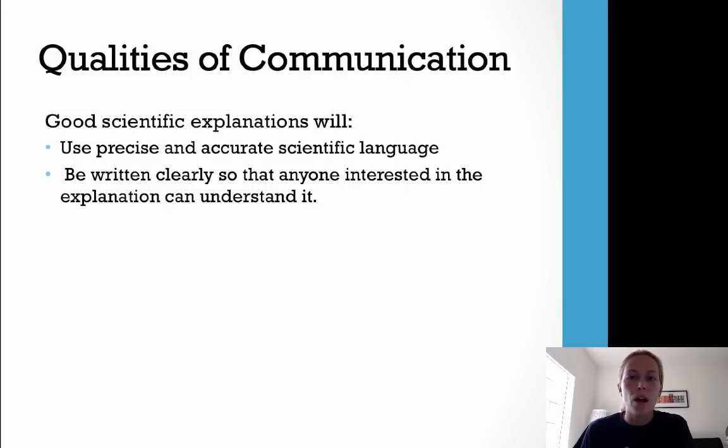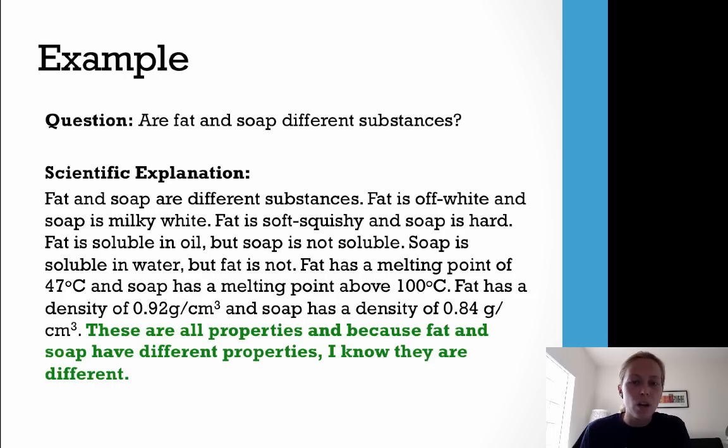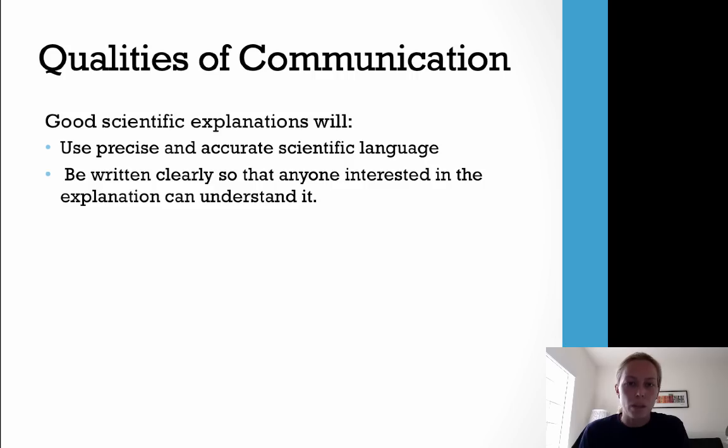A good scientific explanation will use precise and accurate scientific language. If we look back at our example, we see that we're using precise and accurate scientific language—talking about different substances, using specific data like grams per centimeter cubed, looking at melting point. That's all precise and accurate scientific language.